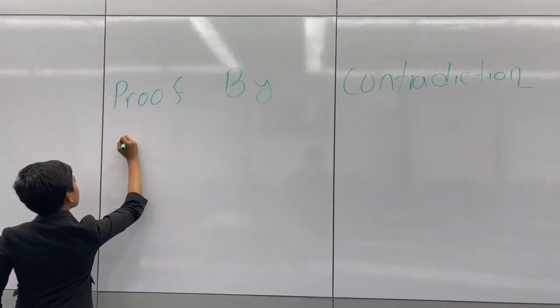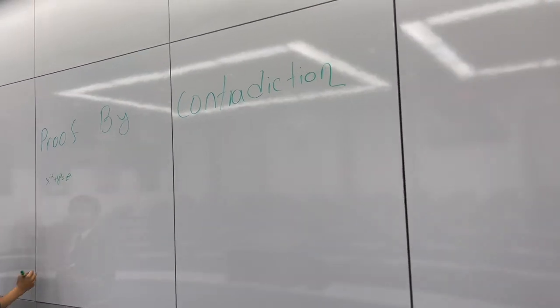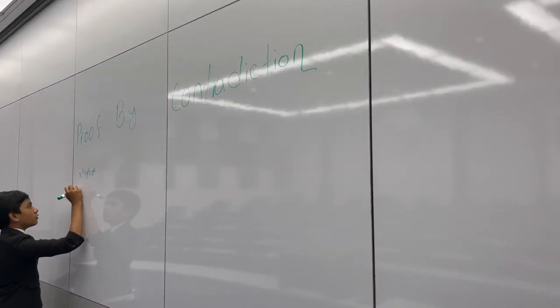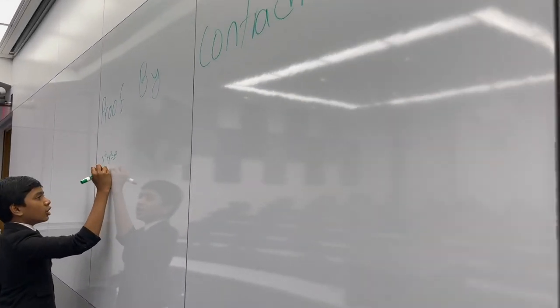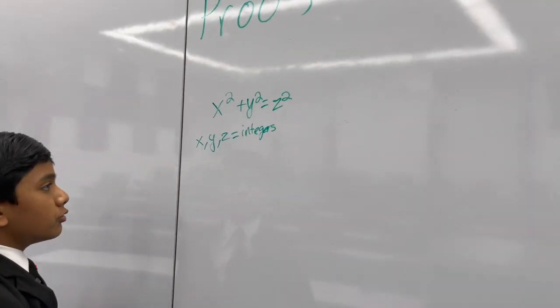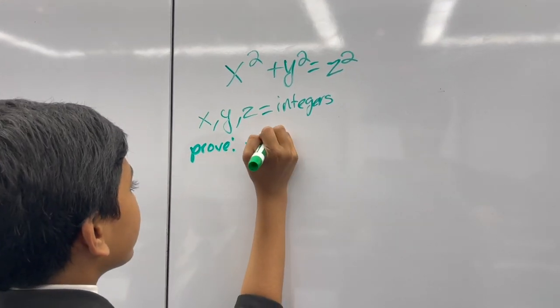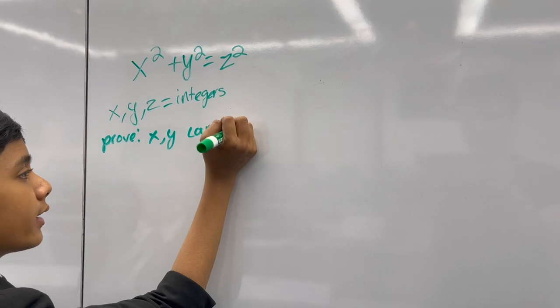Prove that for a Pythagorean triple, x squared plus y squared equals z squared, where x, y, and z are integers. What we want to prove is that x and y cannot both be odd.